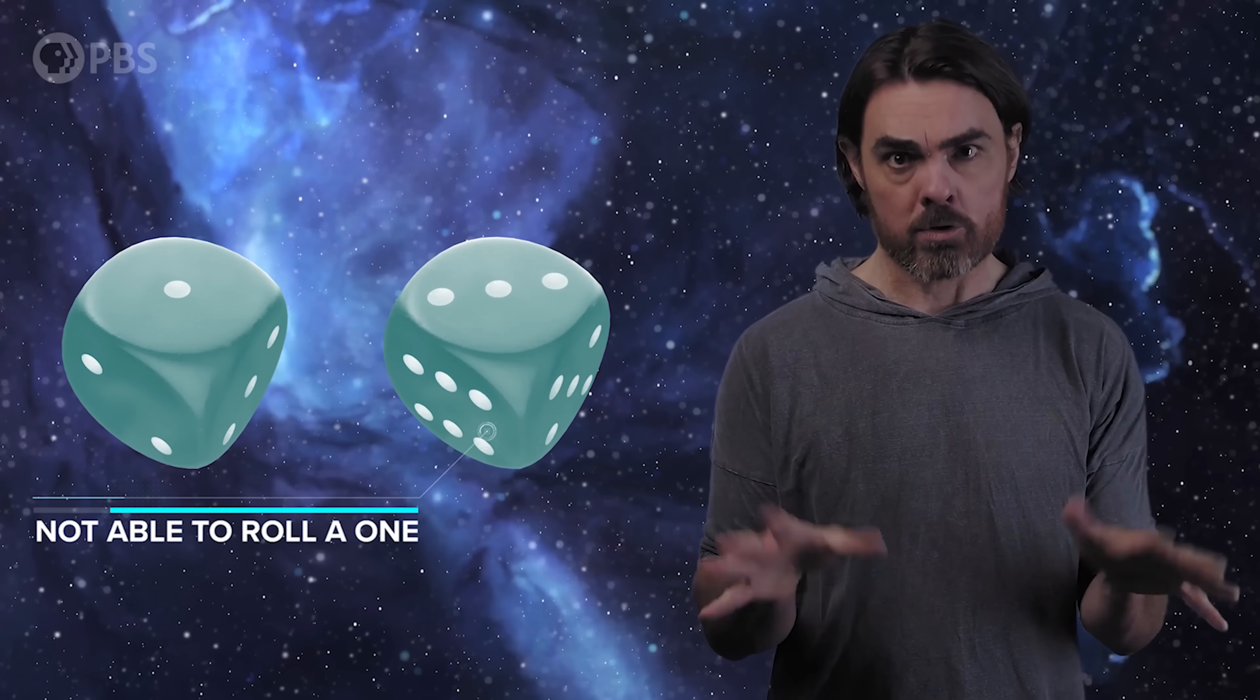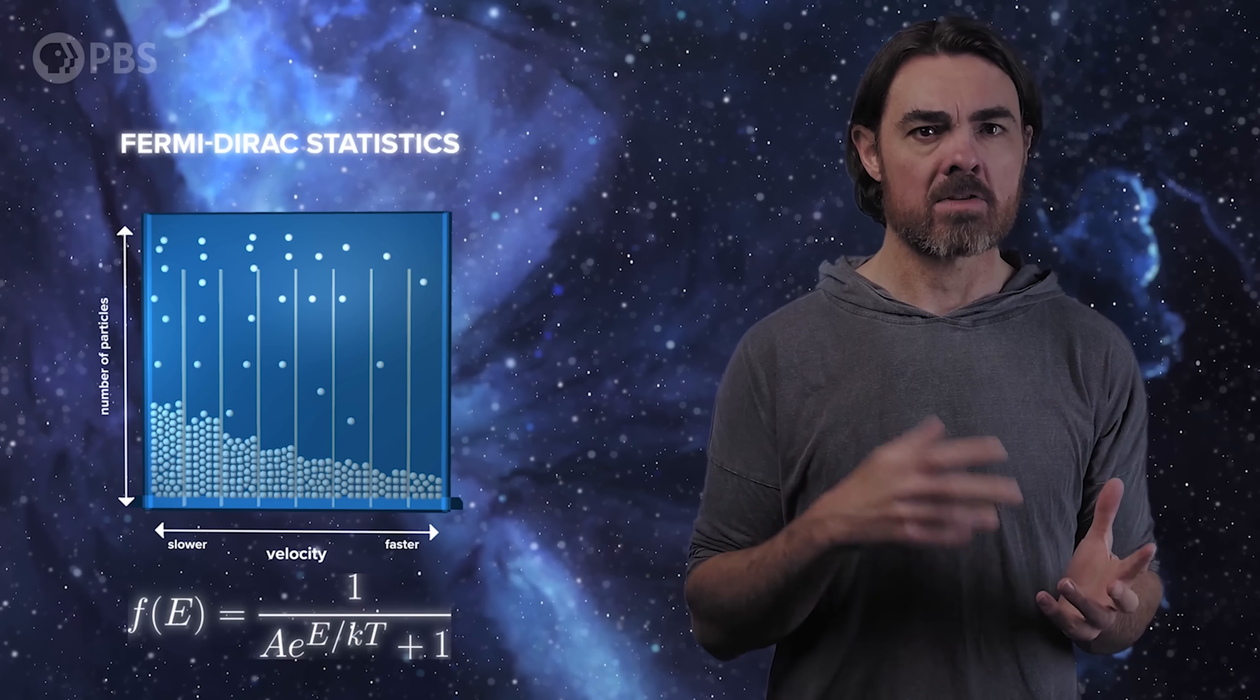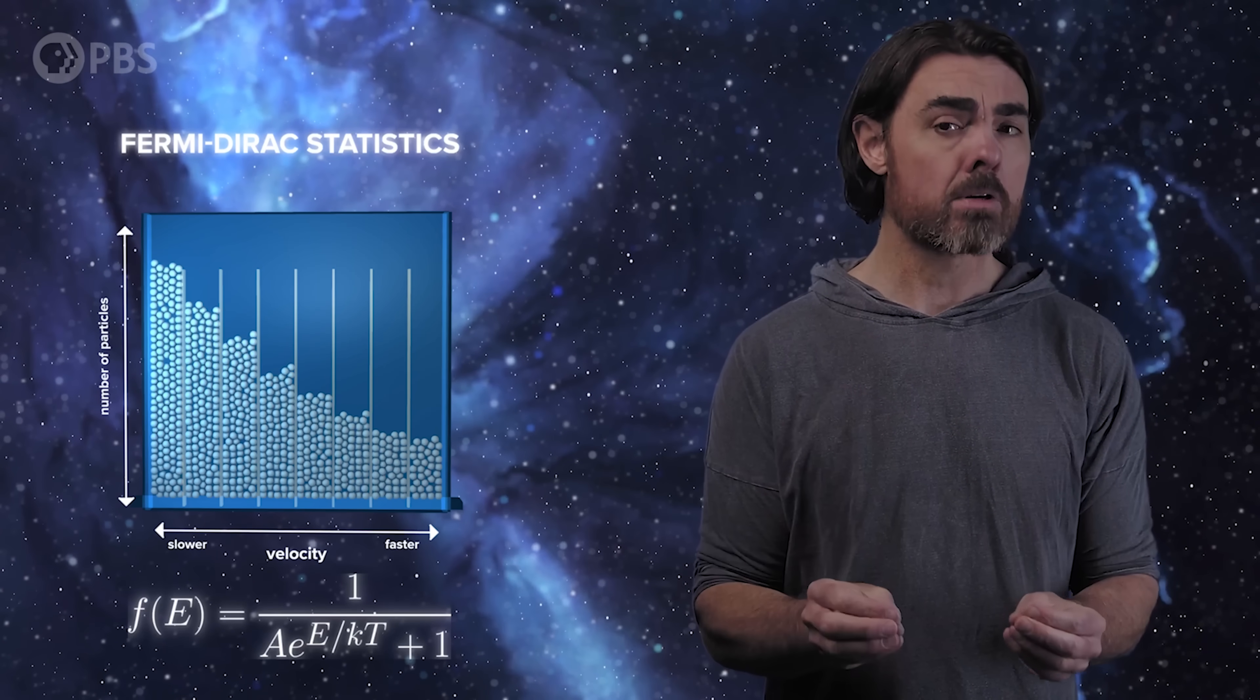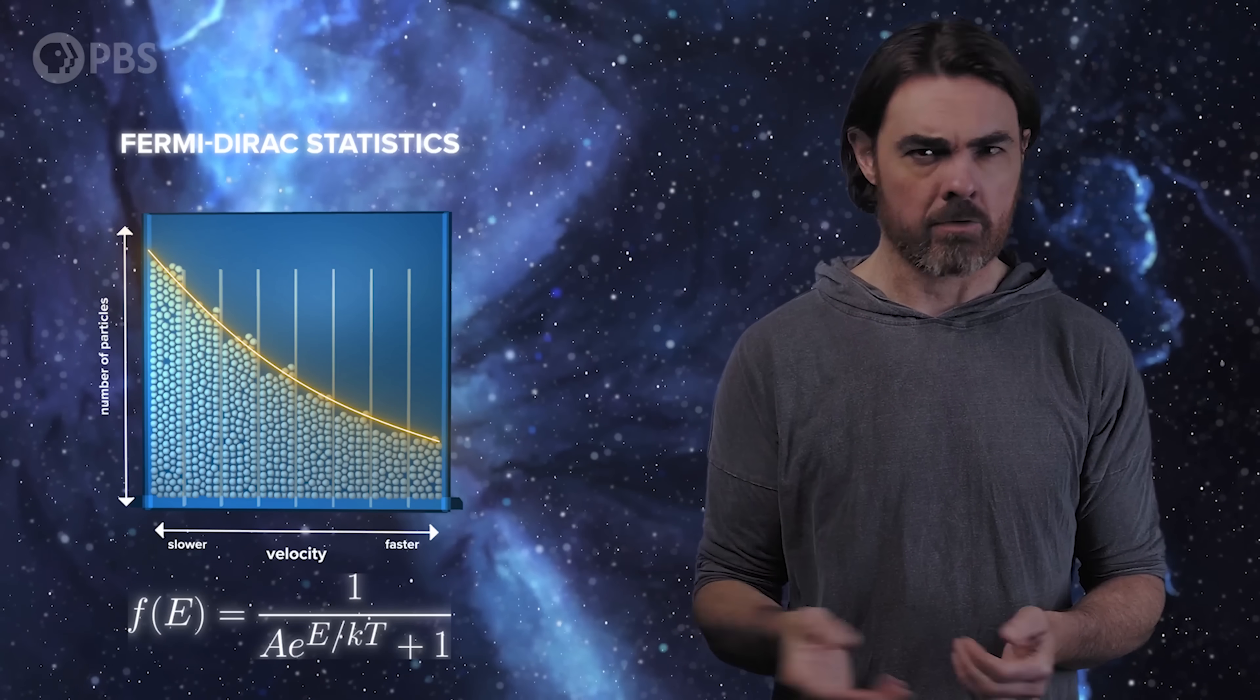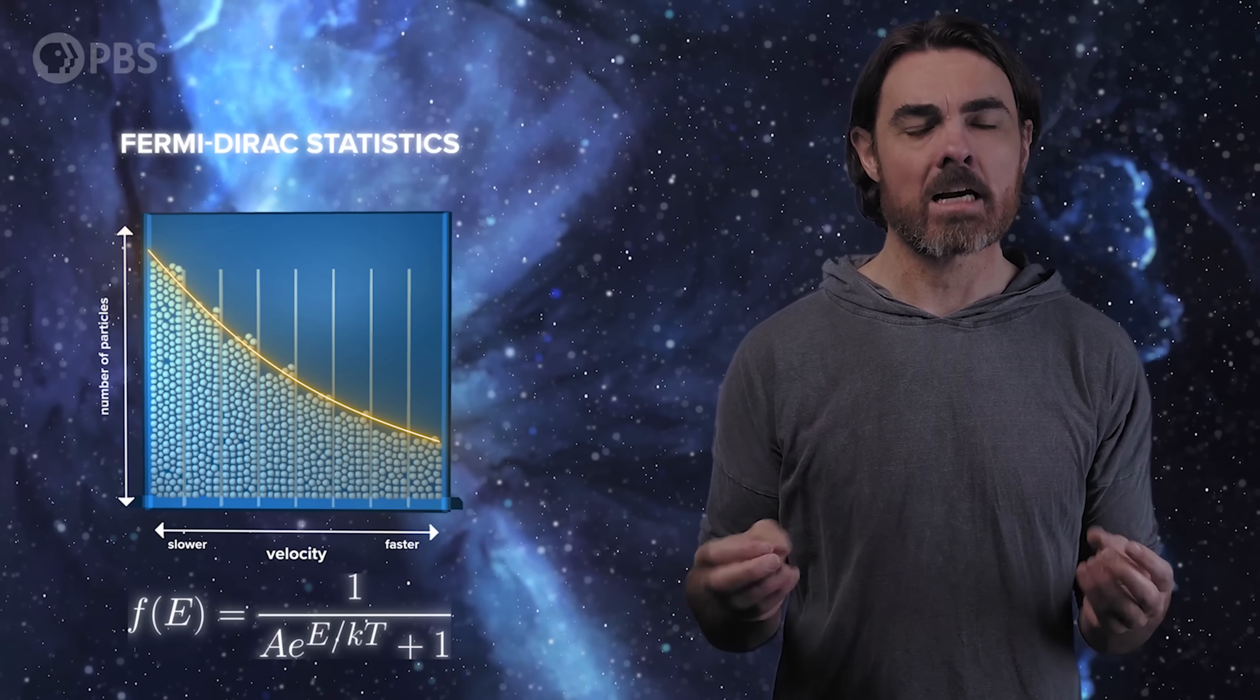For now, we're going to wrap up with one last way of counting states that leads to wildly different behaviour. For Bose-Einstein and Maxwell-Boltzmann statistics, there's no limit to the number of particles per energy bin. But that's not true of all particle types. Some particles refuse to share their energy bin so that each energy state can only be occupied by a single particle. It will be as though rolling a one on one die meant that the other die could not also roll a one. You need to count the possible states of such particles very differently and the result is Fermi-Dirac statistics, named for Enrico Fermi and Paul Dirac, two of the founders of quantum theory. Particles obeying these statistics are called fermions.